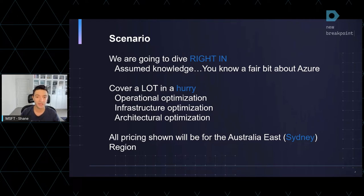We're going to cover three main domains: operational optimization, infrastructure optimization, and lastly, architectural optimization.